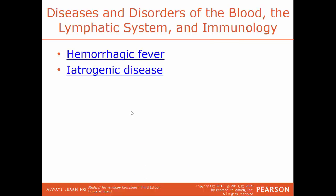Hemorrhagic fever is a broad term covering diseases that cause fever, chills, and malaise, potentially leading to kidney failure and becoming fatal. They are caused by a class of viruses called arboviruses. Examples include dengue fever, Ebola, and yellow fever. Iatrogenic disease refers to any disease caused by being treated for something else — incorrect medication dosage, reactions to antibiotics or dyes, or organ damage such as liver or kidney damage from certain medications.